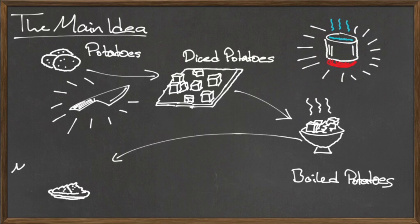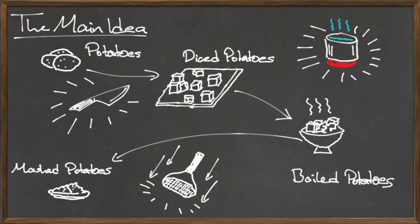Finally, we need to mash our boiled potatoes. We can view this process as a function whose input is the boiled potatoes, whose output is the mashed potatoes, and the rule applied is that of mashing. The end result of this entire process is mashed potatoes, but we had to take several steps to get there. Notice that every time we move on to a new step, the output for the previous step is used as the input for the current step.